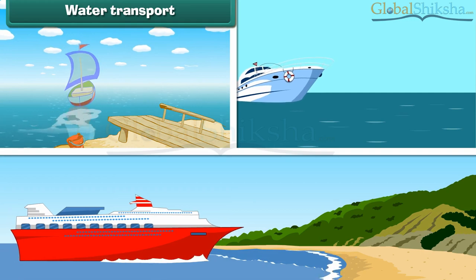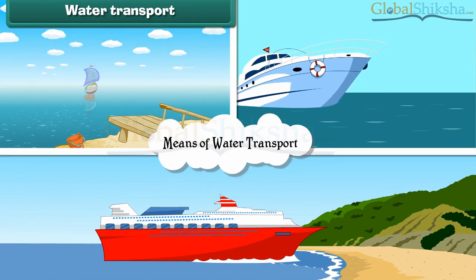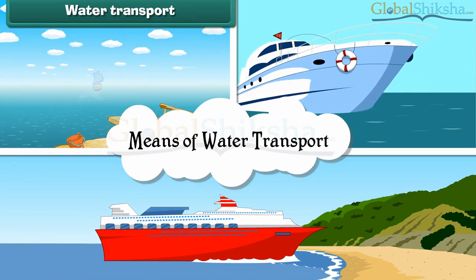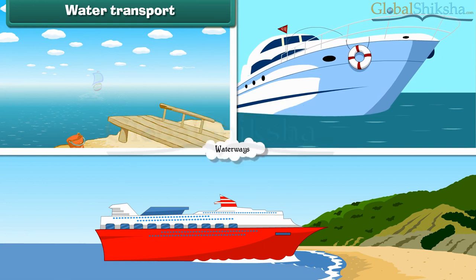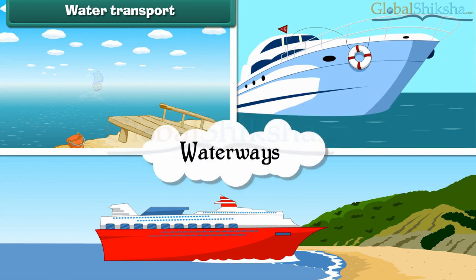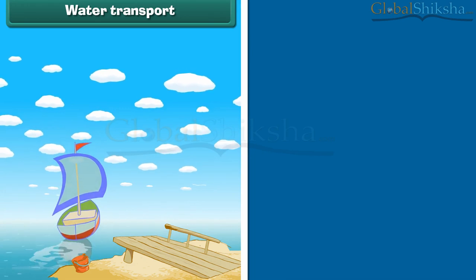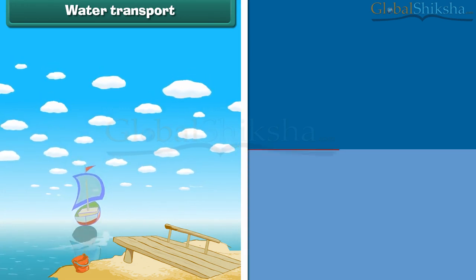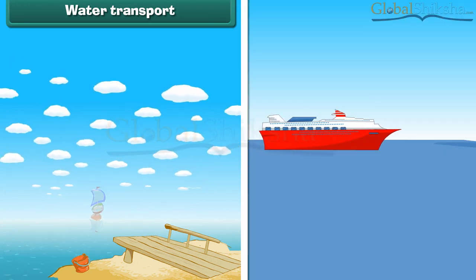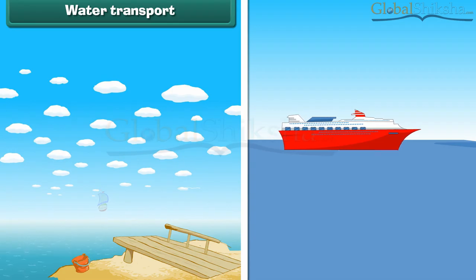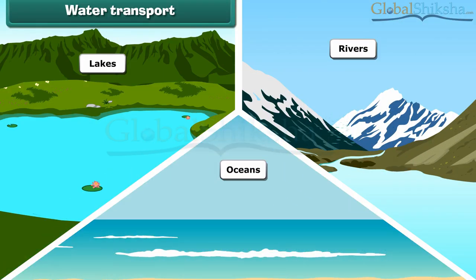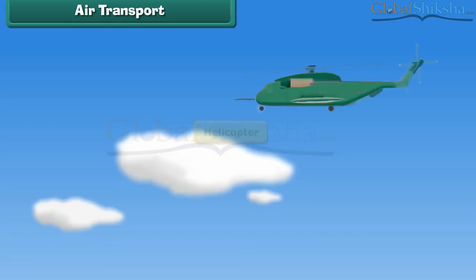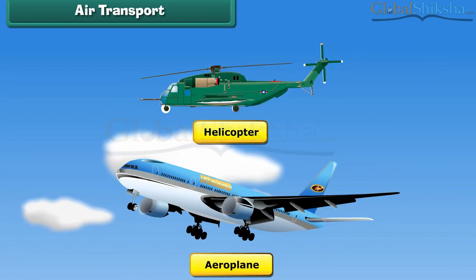You have seen boats, steamers and ships. These are the means of water transport. These vehicles run through waterways. Boats run in lakes and rivers, while ships run in deep and large water bodies. Lakes, rivers and oceans are the examples of waterways.